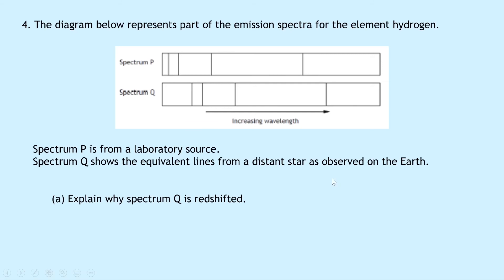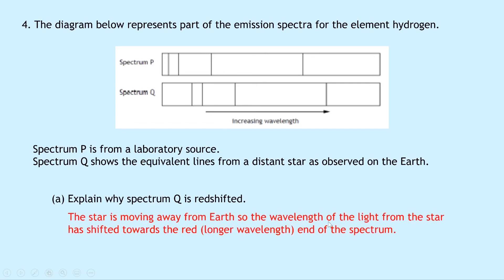Question 4 says that the diagram below represents part of the emission spectra for the element hydrogen. Spectrum P is from a laboratory source, and spectrum Q shows the equivalent lines from a distant star as observed on the Earth. The lines in spectrum Q are redshifted — they've increased in wavelength towards the red end of the spectrum. Part A says to explain why spectrum Q is redshifted: the star is moving away from the Earth, so the wavelength of the light has shifted towards the red or longer wavelength end of the spectrum.